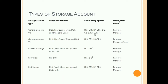The redundancy options include LRS (Locally Redundant Storage), GRS (Geo-Redundant Storage), RA-GRS (Read-Access Geo-Redundant Storage), ZRS (Zone-Redundant Storage), GZRS, and RA-GZRS. For General Purpose v1, the supported services are Blob, File, Queue, Table, and Disk, with LRS, GRS, and RA-GRS redundancy. The deployment model supports both Resource Manager and Classic portals.